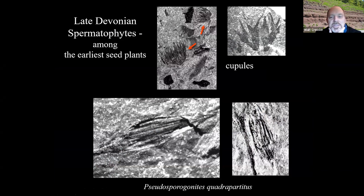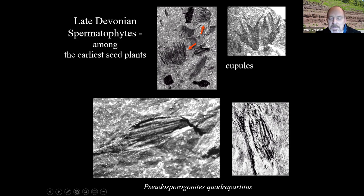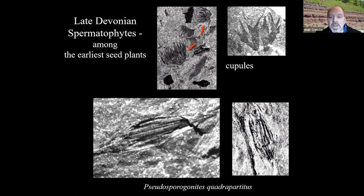The seed plants or spermatophytes at Red Hill are contemporaneous with the other known oldest seed plants like Alkinzia from West Virginia, which has been described in great detail in the literature. These seeds or ovules — don't know if they were fertilized, so we'll call them ovules — there's a variety of them, with different cupule structures. These early seeds had structures that surrounded them, which was part of the paper about Pseudosporogonites quadripartitis.